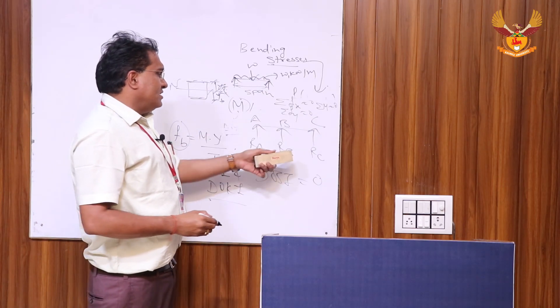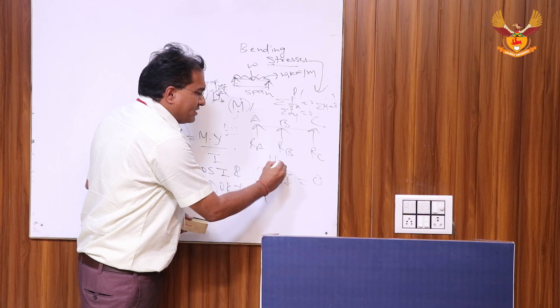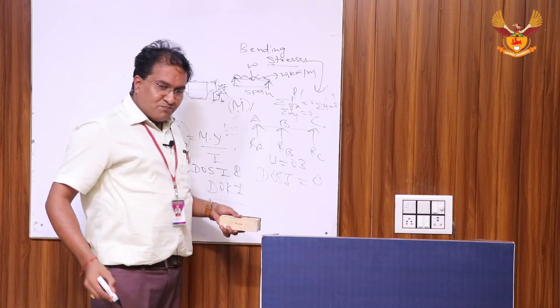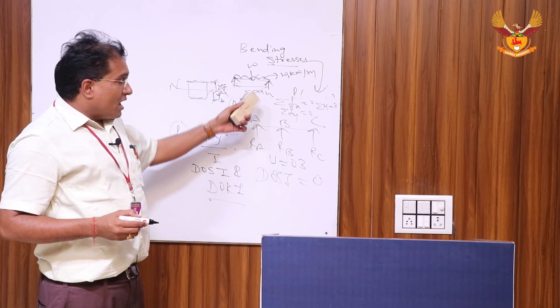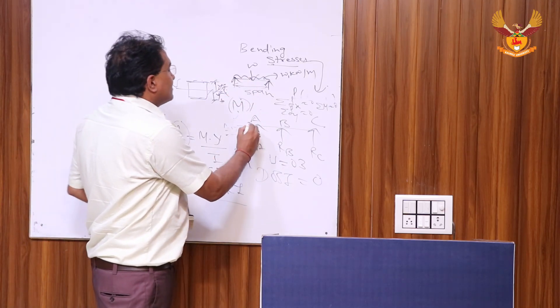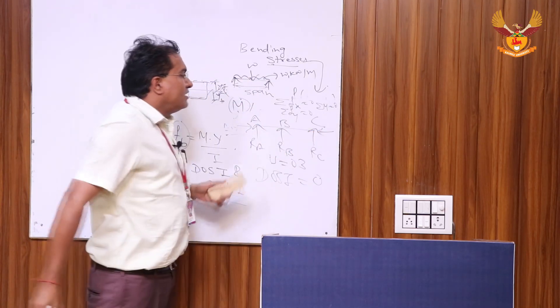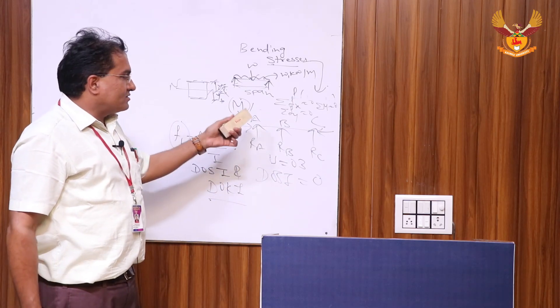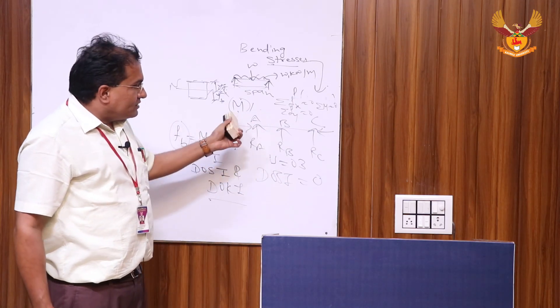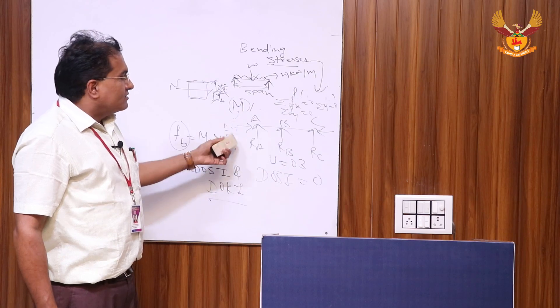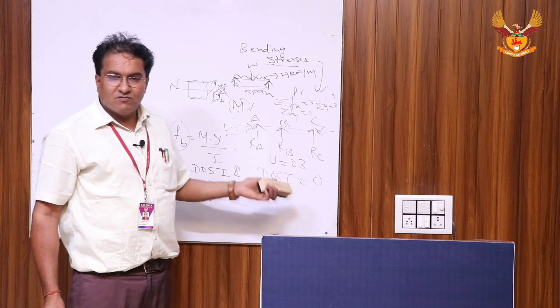So equations of equilibrium are 3. If I am considering the horizontal reactions acting on this beam, if I am considering the horizontal reactions, then obviously DOSI is equal to 0.